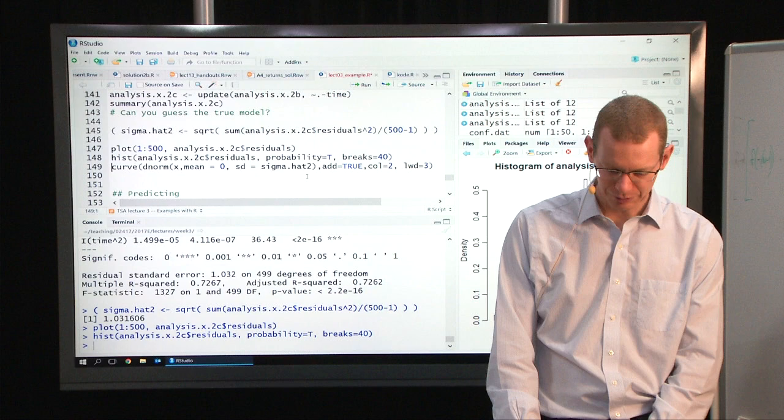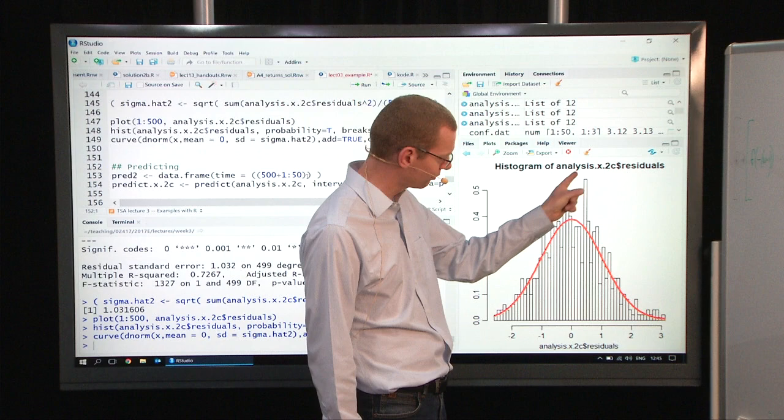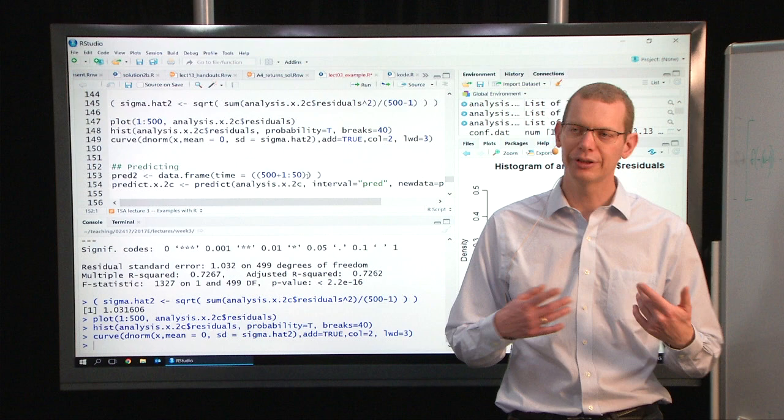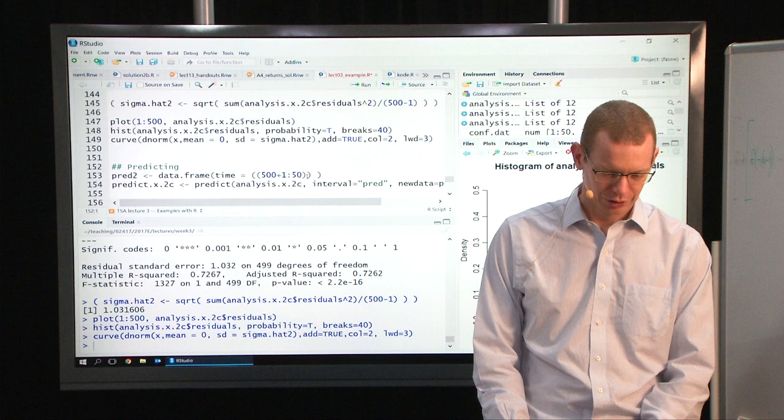Let's look at the residuals again before saying too much about it. A histogram and the density curve, it looks quite nice. It's not unlikely to have spikes like that. If we look at the other plots for validating the model, things are quite nice in this setting.